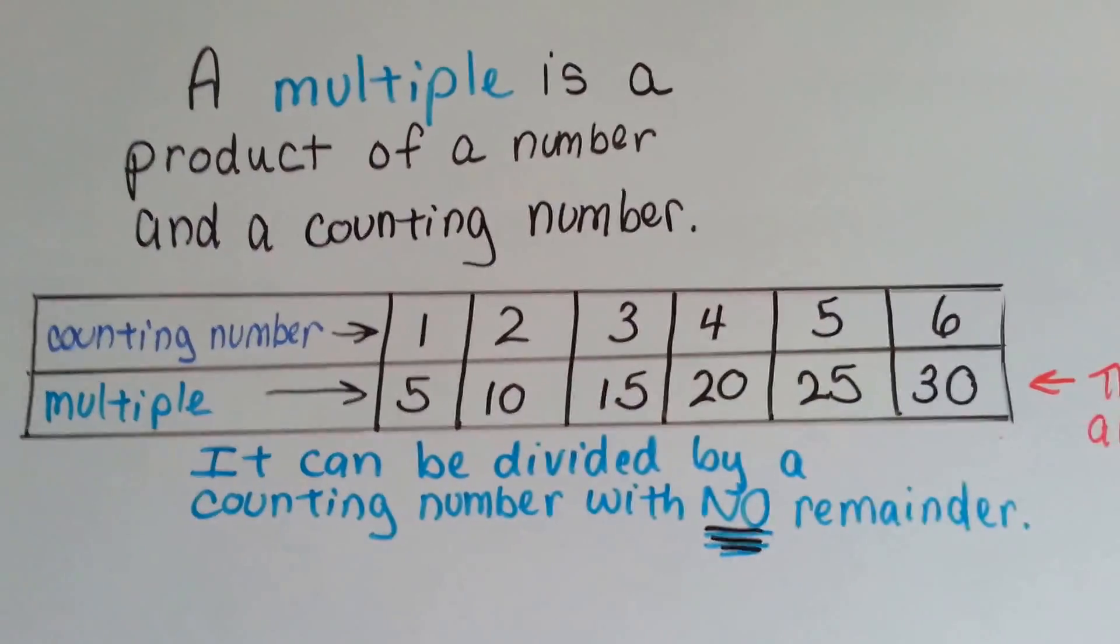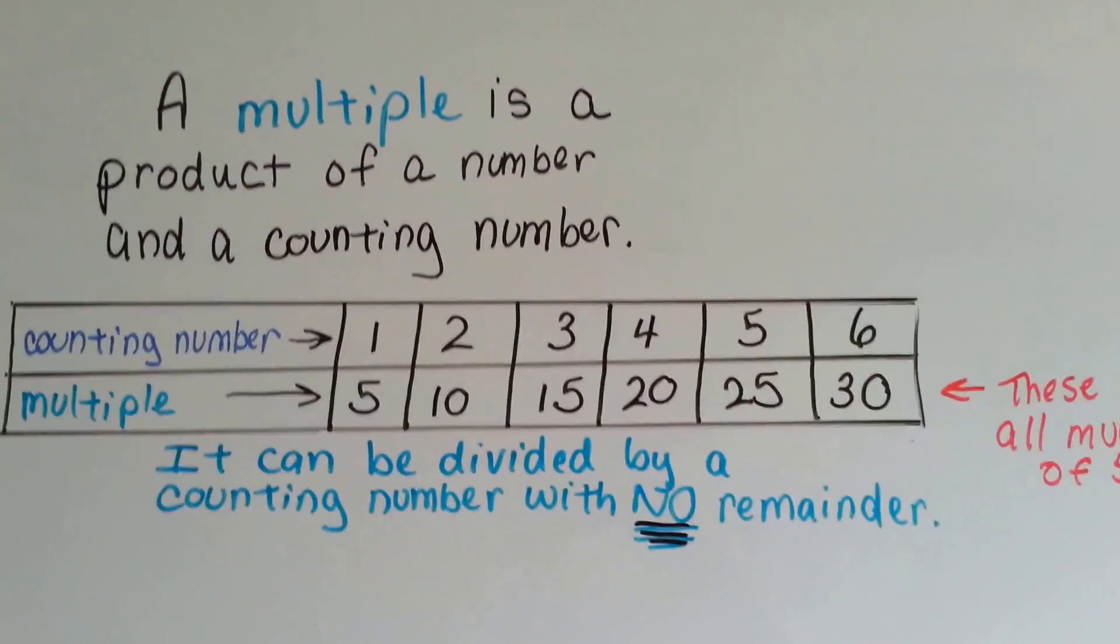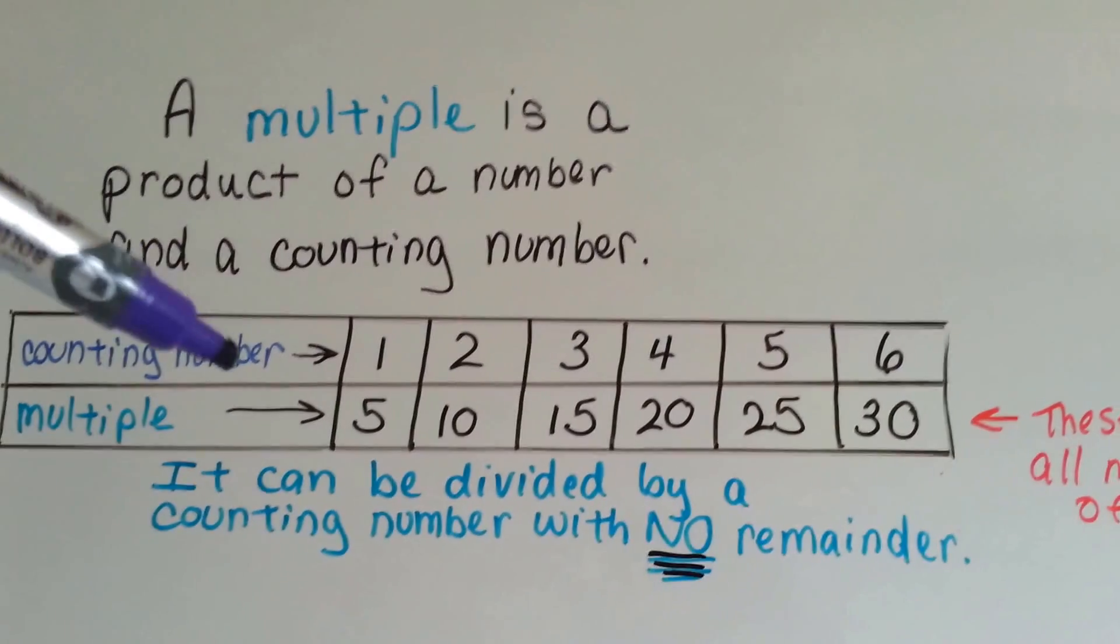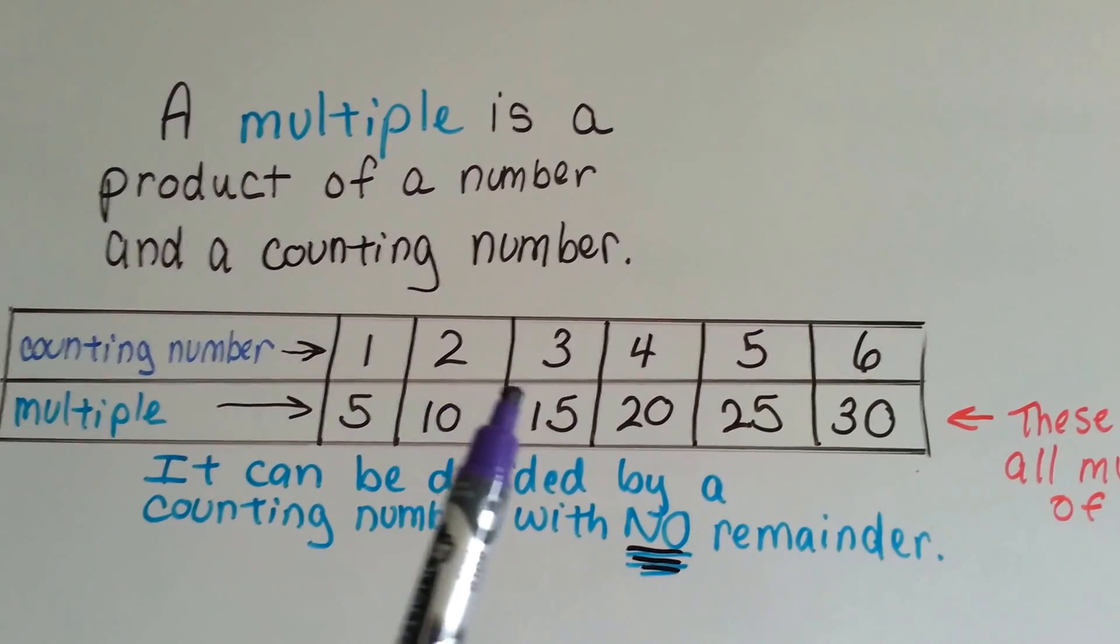I want you to remember that a multiple is a product of a number and a counting number. So if these are our counting numbers, 1, 2, 3, 4, 5, 6,